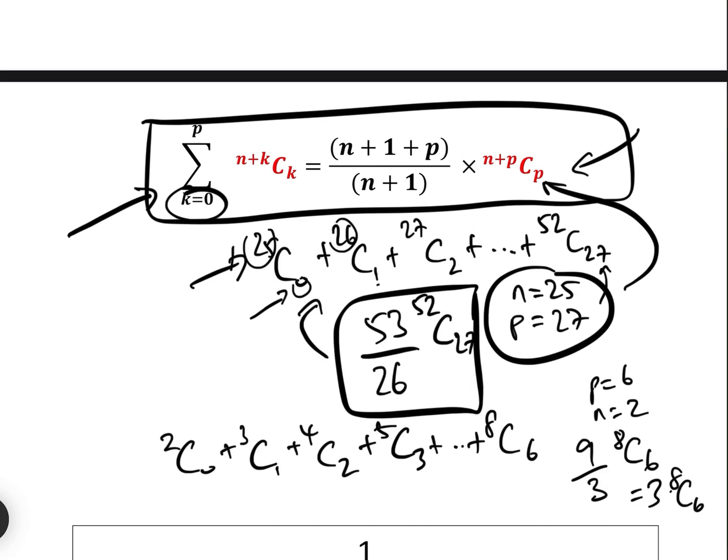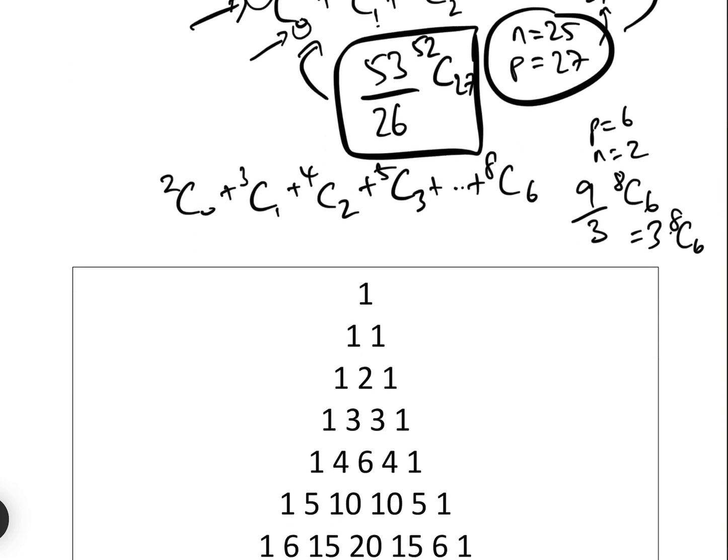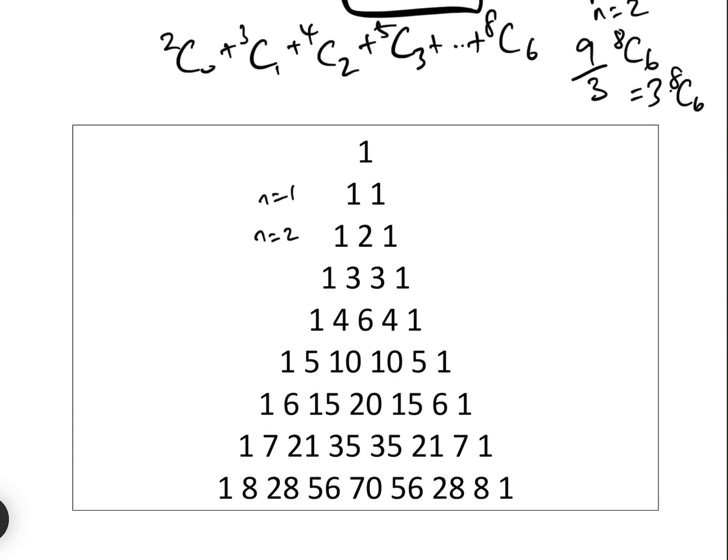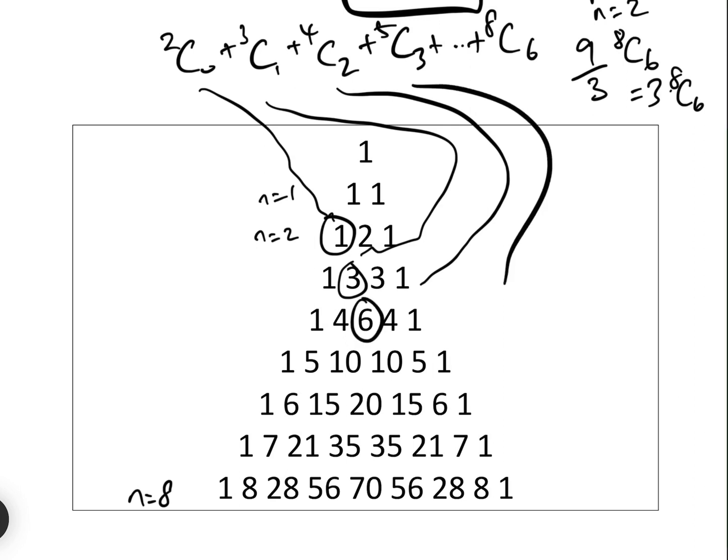Now let's, we can actually put this into Pascal's triangle because here's N equals 1 and here's N equals 2 and here is N equals 8. I like using Pascal's triangle because it actually turns the formula into real life. So 2C0 is that one, and 3C1 is that one, and 4C2 is that one, and 5C3 is that one, and 6C4 is that, and 7C5 is that, and 8C6 is that. So what this formula is telling us here is that the sum of all of those there, which is that, equals 3 times 8C6, which is that one.